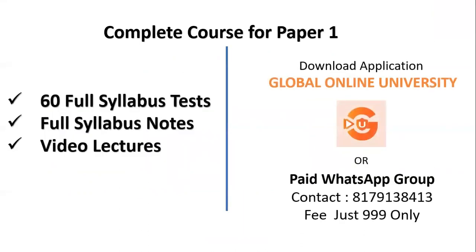At the same time, we have a complete course for Paper 1, which consists of 60 full syllabus tests, full syllabus notes, and video lectures. You can avail this facility by downloading the Global Online University application. You can also join a paid WhatsApp group — contact details are given below — and the fees for the same is 999 only.